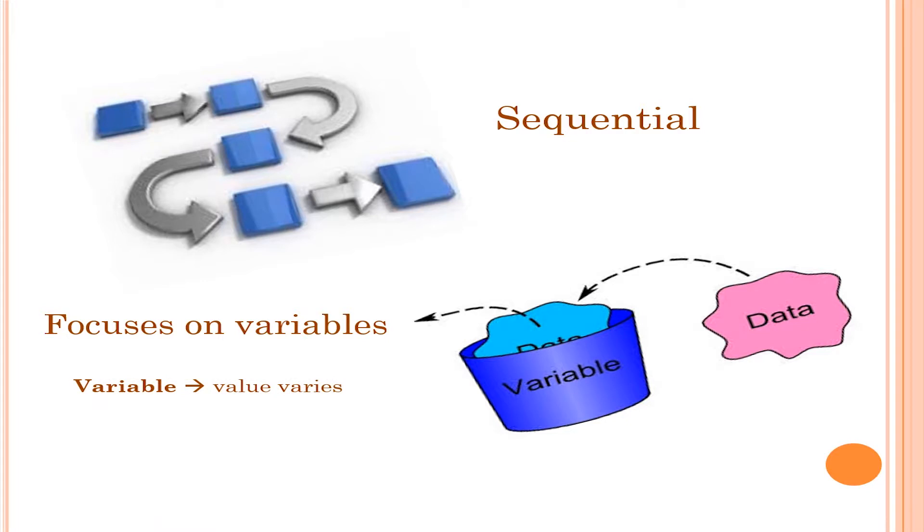Like, x is a variable that have value 2 at some time and value can be 4 at another time. So value can be varied from one time to another. Hence, if we want to find the paradigm of same types of programming languages, then we can say that programming languages in which sequential programs are written and they focus on variables have procedural paradigm.